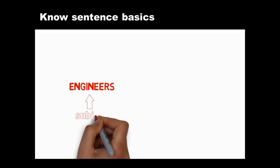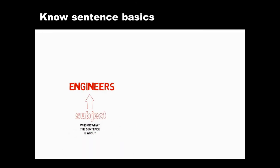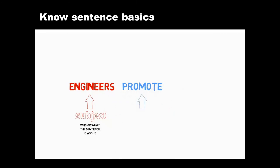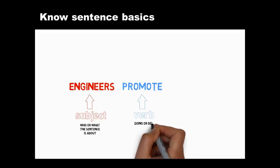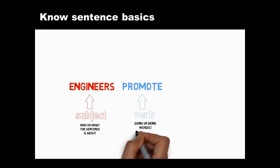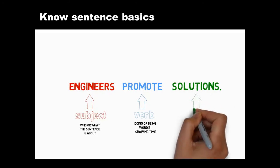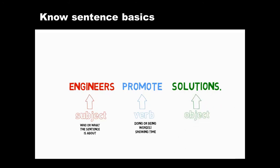The subject tells readers who or what the sentence is about. Second, follow this subject swiftly with a complete verb. Verbs are doing or being words. Complete verbs show past, future, or present time by changing their form. Third, if you need one, place an object straight after the verb. Objects tell readers who or what the verb is affecting.